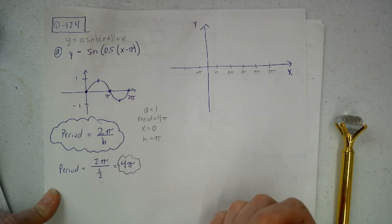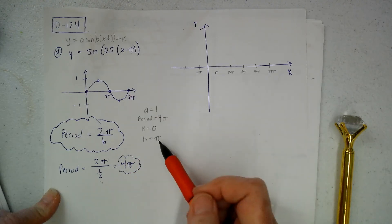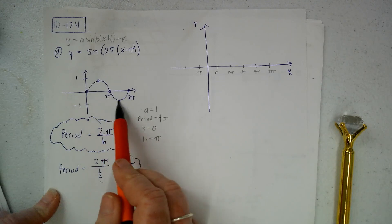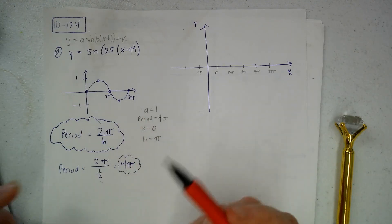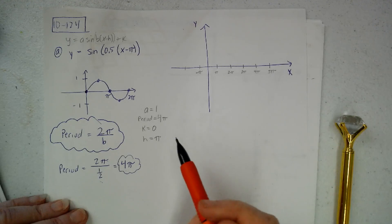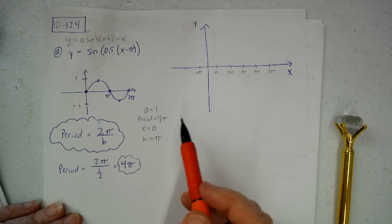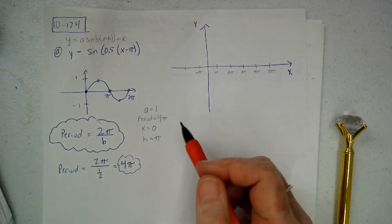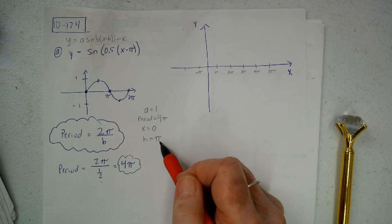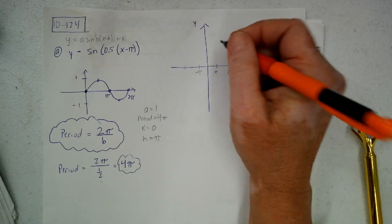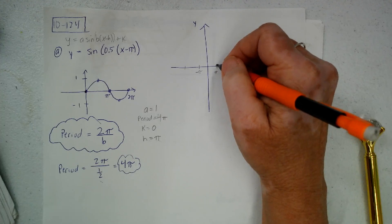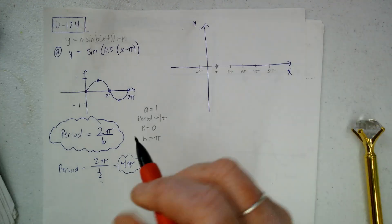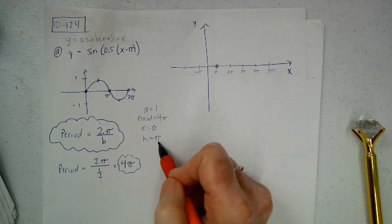And H is π, so that means it's going to look like this graph. So I'm going to use these three points to start graphing my sine function. I like to start at the horizontal. I'm going to start at π because that's H.